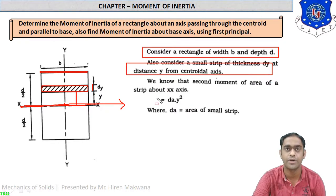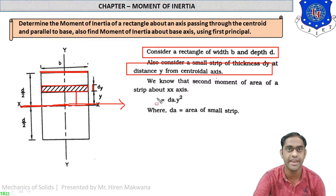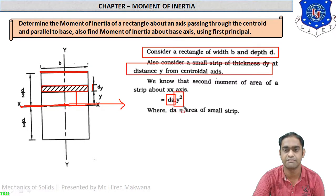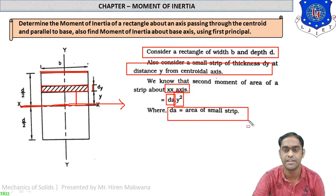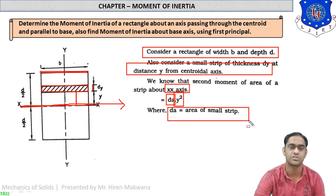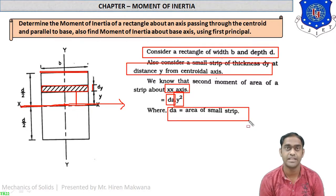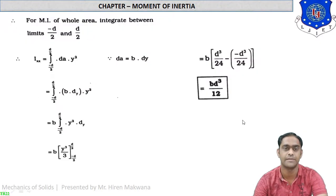The moment of inertia, or second moment of area, is equal to area times distance squared — dA times y squared. This gives the moment of inertia about the centroidal x-x axis. dA is the area of the small strip, so the basic formula is dA times y squared.